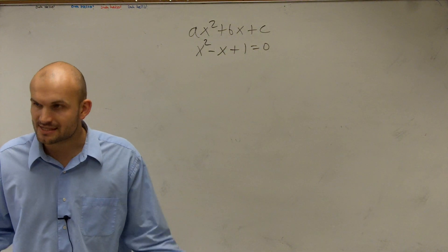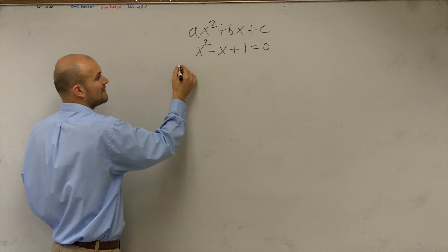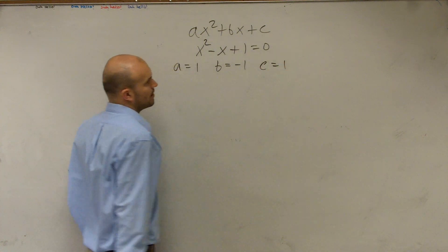Every single time, let's just label a, b, and c. In this case, we have a equals 1, b equals negative 1, and c equals 1.